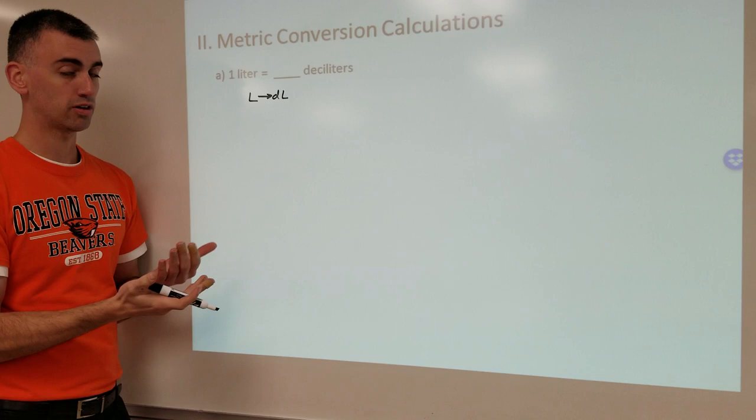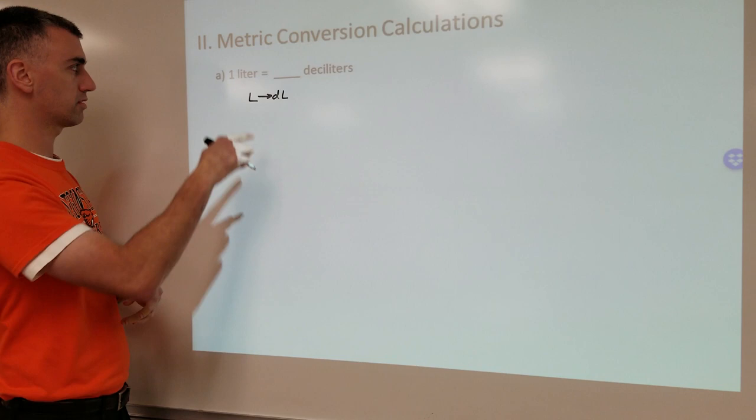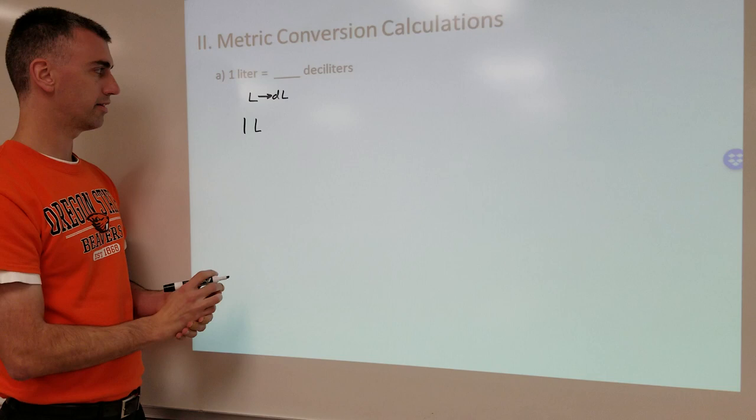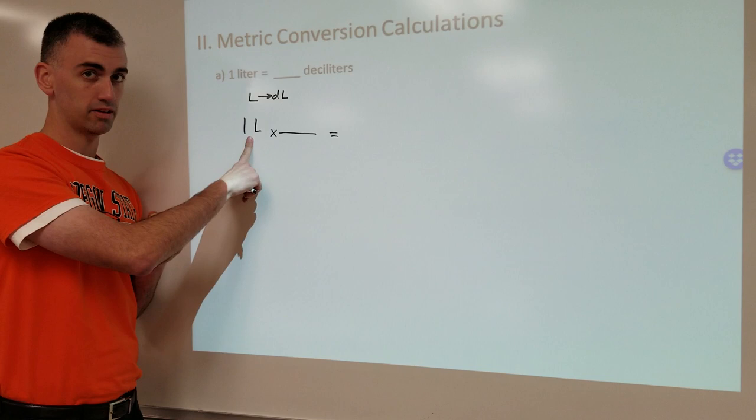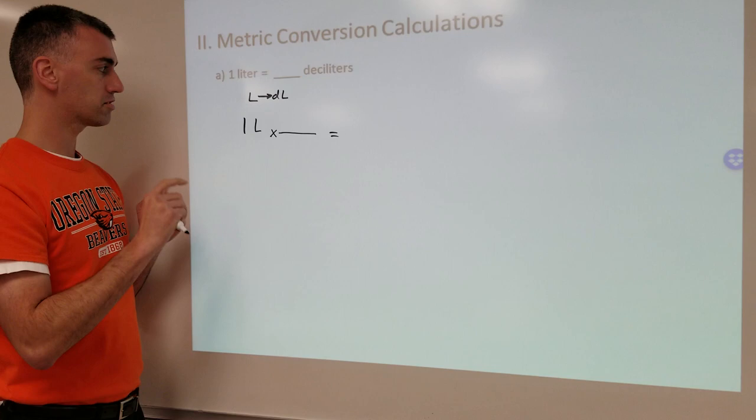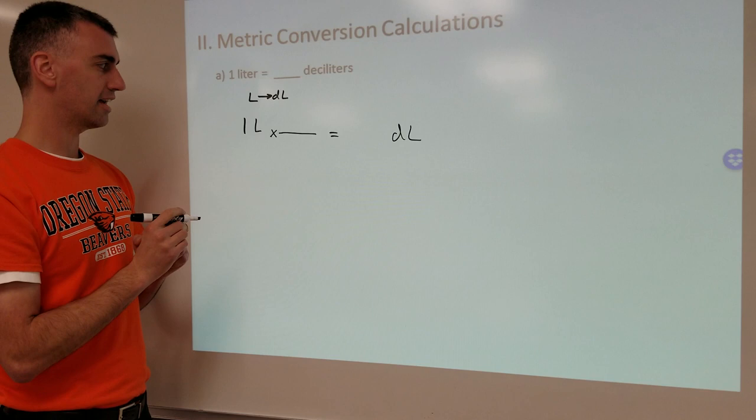When I do the actual conversion itself, after coming up with the plan, the first step is to write what I'm given. So if I'm given one liter, I write one liter. Then if I'm doing one conversion, I put times and then a conversion factor. Step one is I write what I'm given. Step two is I then set up the units. I'm trying to get deciliters as an answer, and that means deciliters needs to be on top. So deciliters goes here.